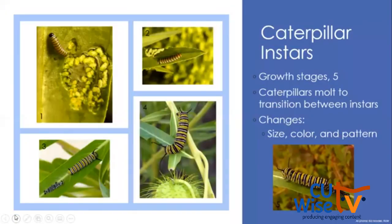The caterpillar life stage is the feeding stage where the caterpillar will change drastically in size in a very short time. To accommodate this rapid growth, caterpillars go through five growth stages which are called instars. Here we can see the five instars of the monarch caterpillar. The caterpillar will molt to transition between instars, and during that molting process the caterpillar will actually digest and reabsorb most of its skin, leaving just a thin layer that sheds off.